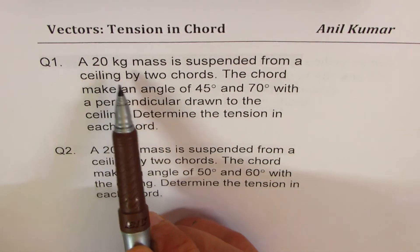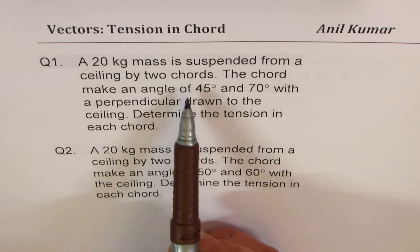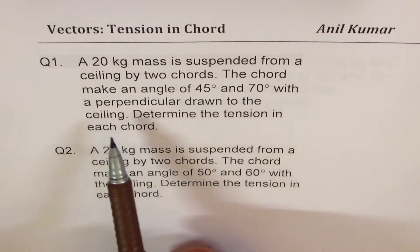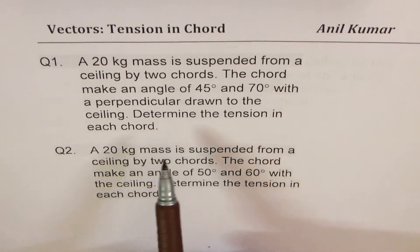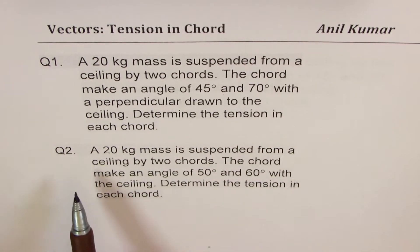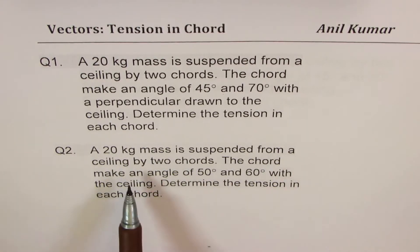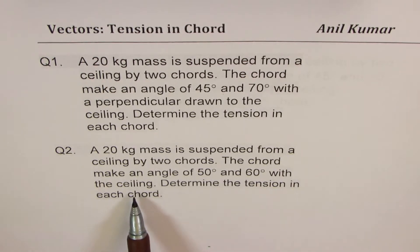I've taken two very similar questions where we'll calculate tension in the cord. Question number one: a 20 kg mass is suspended from a ceiling by two cords. The cords make an angle of 45 degrees and 70 degrees with a perpendicular drawn to the ceiling. Determine the tension in each cord.